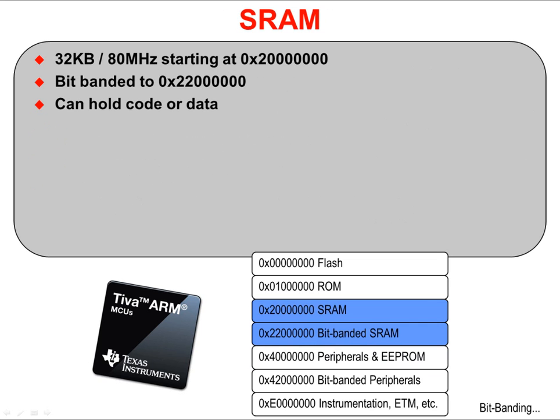SRAM memory is 32K long, starting at 0x20000000, and operates at 80 MHz. That physical memory is bit-banded into 0x22000000. SRAM can hold code or data; you can execute code out of SRAM if you choose to do so.